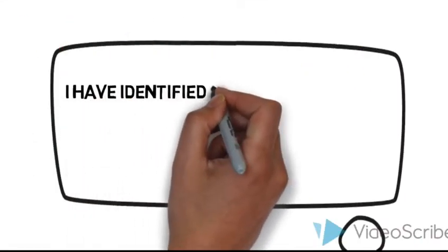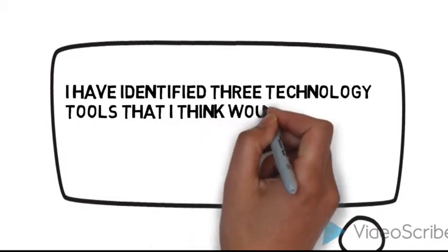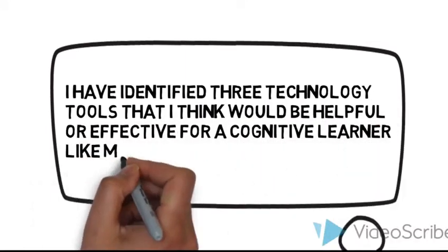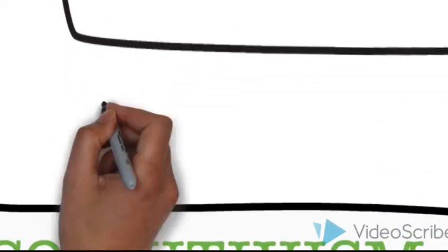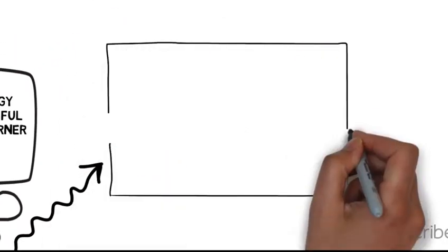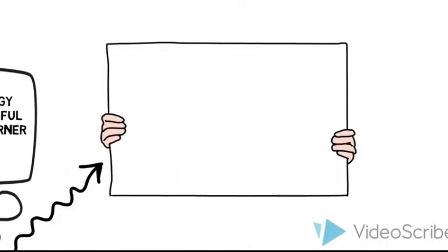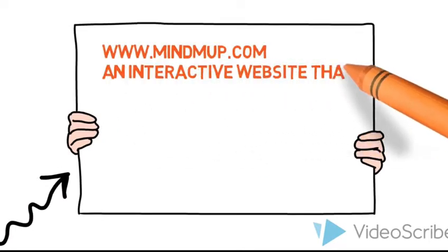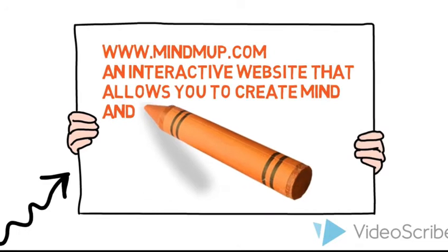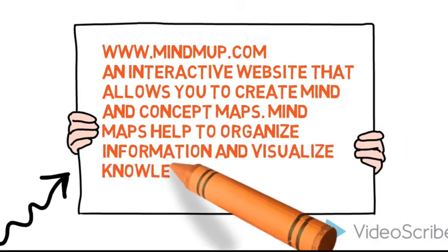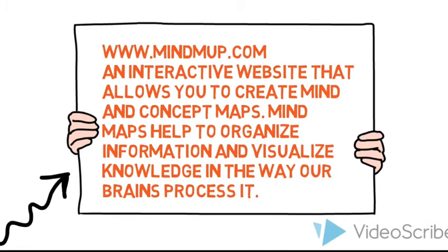I have identified three technology tools that I think would be helpful or effective for a cognitive learner like myself. The first tool is MindMap. MindMap is an interactive website that allows you to create mind and concept maps. MindMaps help organise information and visualise knowledge in the way our brains process it.